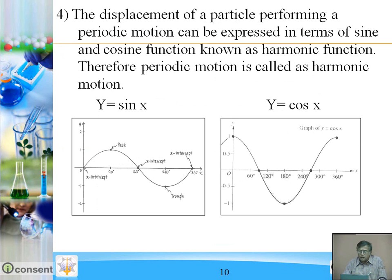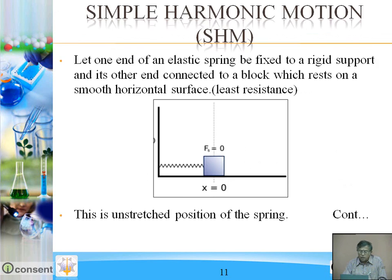The displacement of a particle performing a periodic motion can be expressed in terms of sine and cosine functions. Sine and cosine are trigonometric functions known as harmonic functions. Therefore, periodic motion is called harmonic motion.